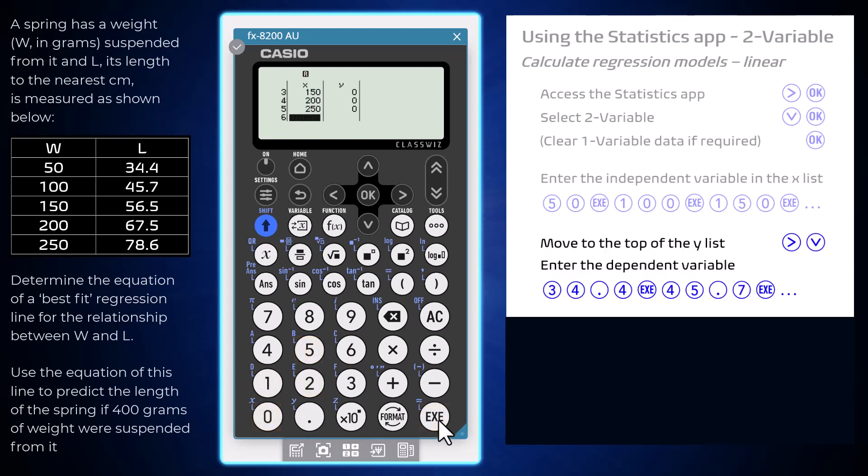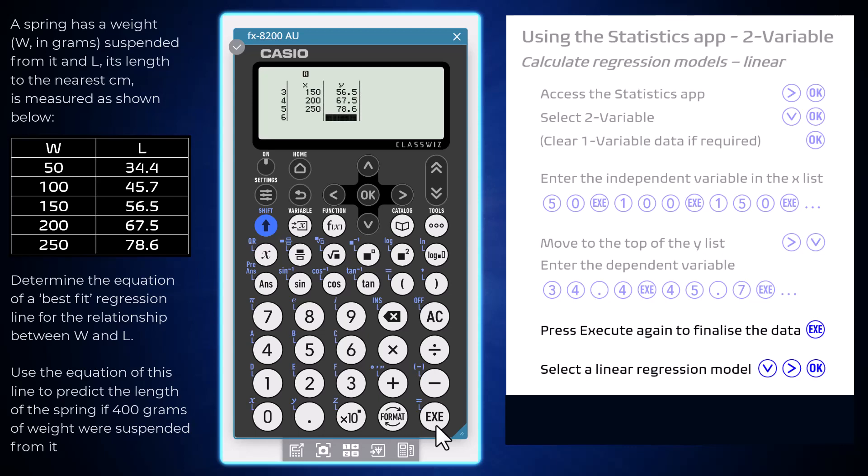Once done, move to the top of the Y list. I'm going to do this by arrowing right and then down to cycle back around to the top of the list. Now enter the dependent variable as the Y list. Press execute to finalize the data set.